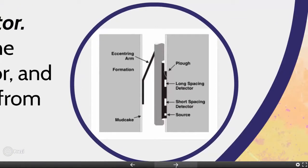The compensated formation density tool has one focused or collimated radiation source, one short-spacing detector at seven inches from the source, and one long-spacing detector at 16 inches from the source. Both detectors are heavily shielded to ensure that radiation only goes into the mud cake and formation, and that detected gamma rays only come from the mud cake or formation. A plough removes part of the mud cake as the tool is pulled up the borehole using a servo-operated arm with a force of 800 pounds.